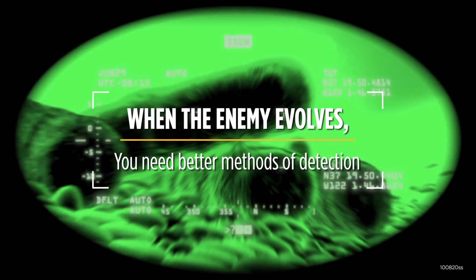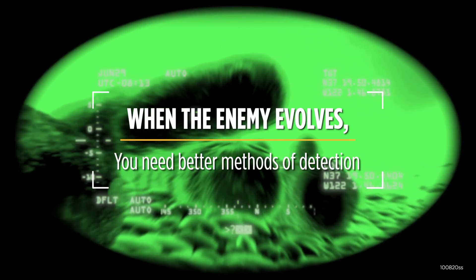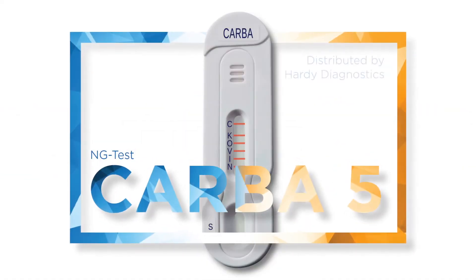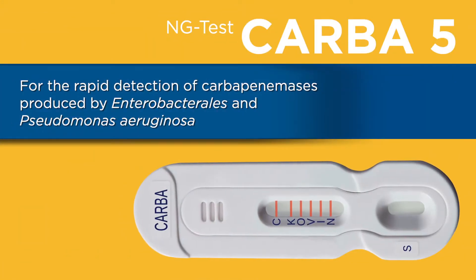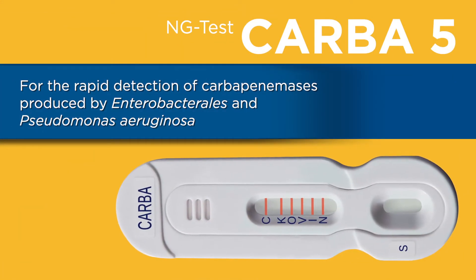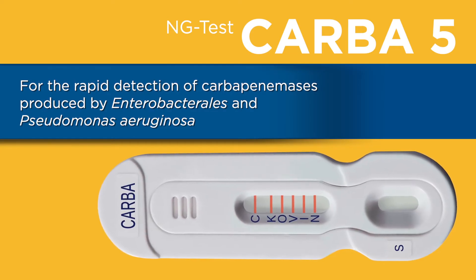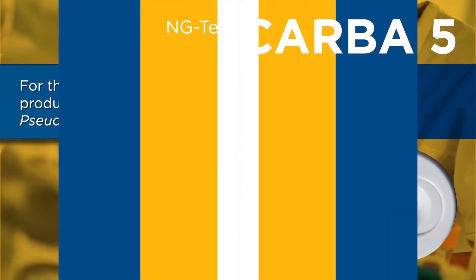When the enemy evolves, you need better methods of detection. Introducing NG-TESS CARBA5, a lateral flow assay for the rapid detection of carbapenemases produced by Enterobacteriales and Pseudomonas aeruginosa.